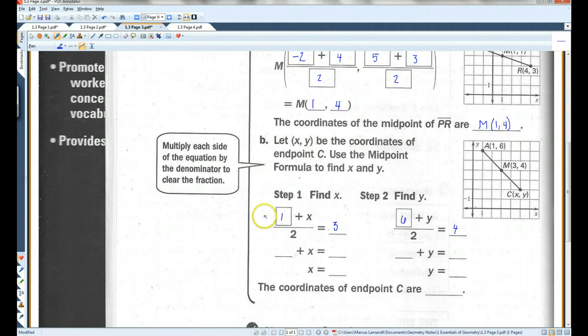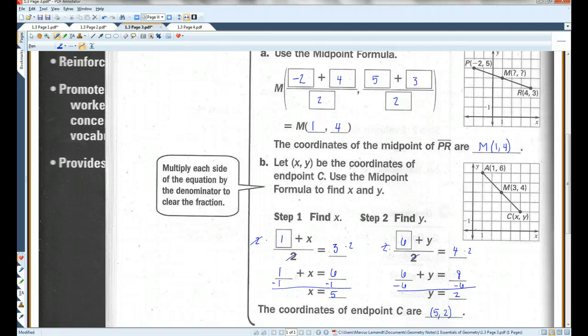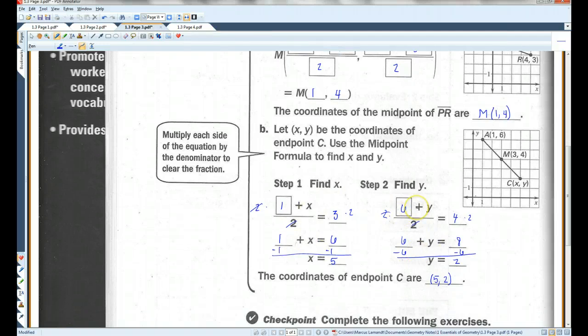Over here, if I multiply both sides by 2, that will get rid of the 2 on the bottom. So now I have 1 plus X equals 6. Now I can subtract 1 from both sides. 6 minus 1 is 5. Same thing over here. 6 plus Y equals 8. Then subtract 6 from both sides. Y equals 2. So the coordinates of endpoint C are 5, 2. So if you're given two endpoints and asked to find the midpoint, this is what you want to do. If you're given an endpoint and a midpoint, this is how you want to go about solving for it.